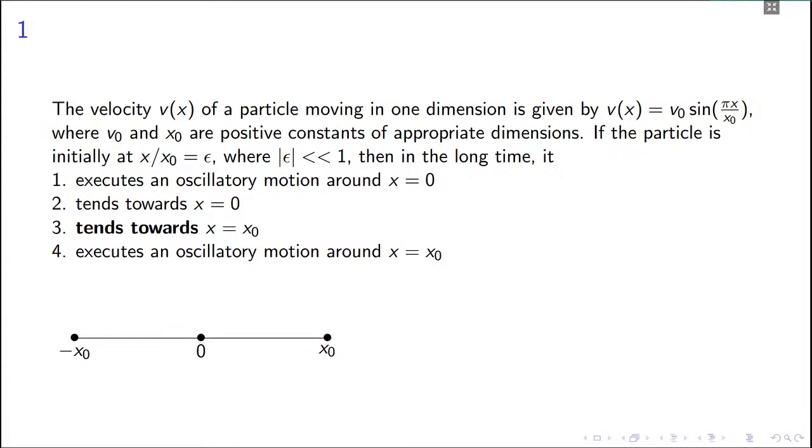The idea is this: it says it starts with this condition, x is ε times x₀. So basically what it's saying is that if the particle starts at a point close to the origin, then of course it will have a positive velocity.